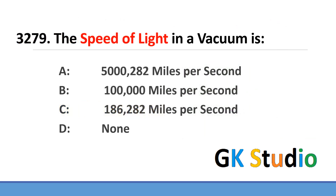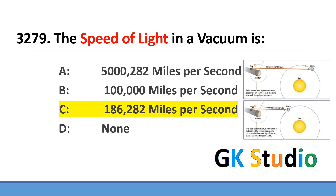The speed of light in a vacuum is 186,282 miles per second.